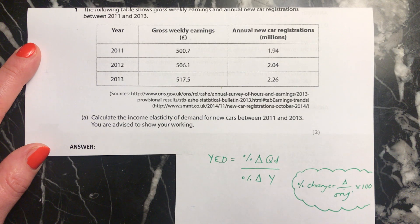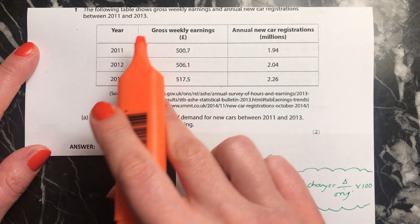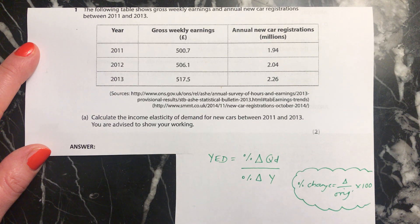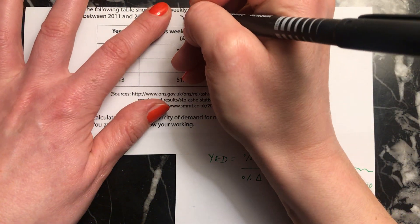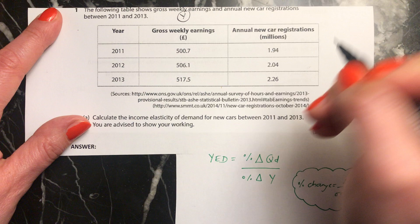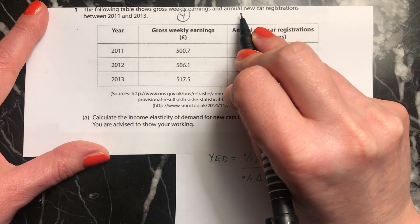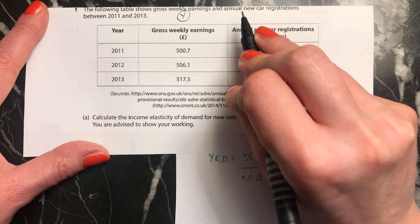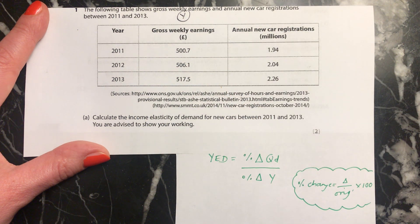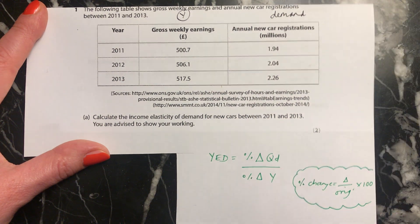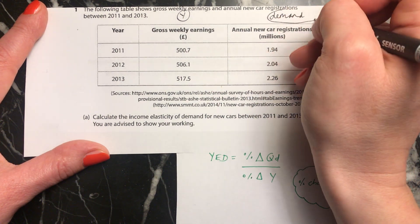Hi everybody. This first question is about income elasticity of demand. This table is showing gross weekly earnings — which is the same thing as income — and new car registrations each year, annually, between 2011 and 2013. This is essentially the demand for cars, so you've got income and you have demand.